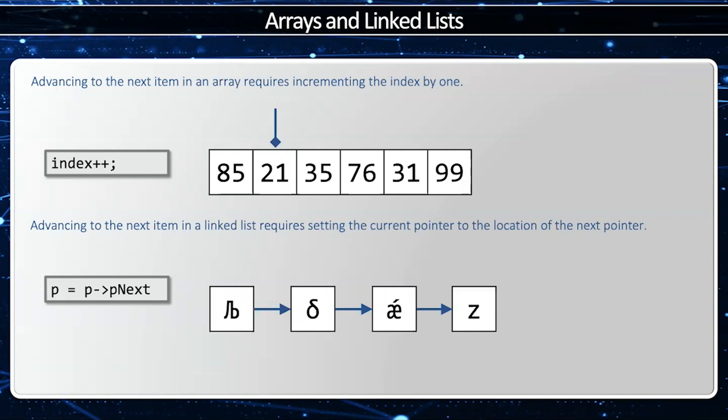So here I have a four element linked list. Initially, p will point to this element. If I want to get to the next element, then I say p equals p arrow p next, and I'll advance the pointer by one slot.